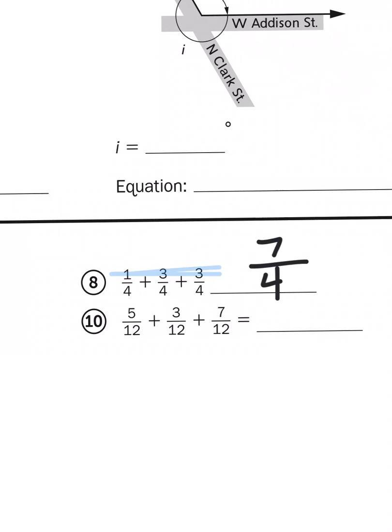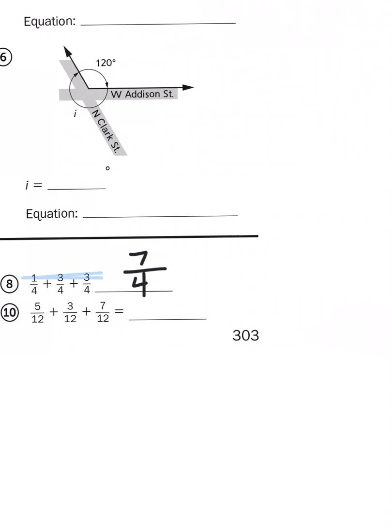Now, an improper fraction is an okay answer, but it's better to come up with a mixed number. Now, when I'm thinking of fourths, I like to think of quarters because we deal with money all the time.